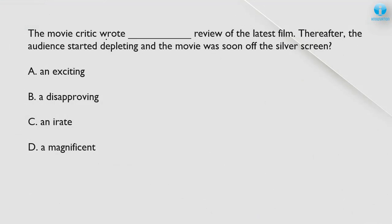The first question: 'The movie critic wrote [dash] review of the latest film. Thereafter, the audience started depleting and the movie was soon off the silver screen.' The audience depleting and the film going off screen indicates a negative sentence. The review must have been negative. 'Exciting' is wrong — people would be coming. 'Disapproving' meaning unfavorable opinion fits correctly. 'Irate' is negative but is used for a person, not a review. 'Magnificent' is a positive word — completely wrong. The correct answer is B: disapproving.